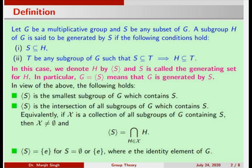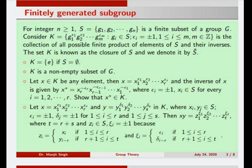In this slide, S is a finite subset of a group G. We make a collection K of all possible finite products of elements of S and their inverses, of the form g₁^ε₁ · g₂^ε₂ · … · gₘ^εₘ, where elements are taken from S and exponents are either 1 or −1. First, K is a non-empty subset of G, as S is contained in K.